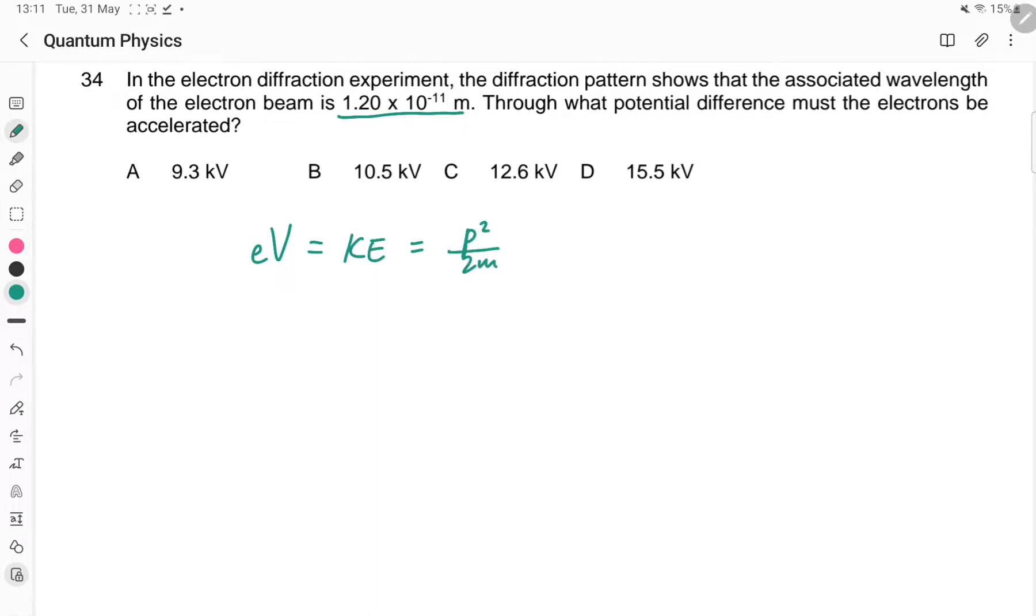We already know lambda, and lambda is equal to H upon P. So if you put that in, eV equals H squared upon lambda squared times 2M. So the voltage will be equal to H squared over 2M lambda squared e.